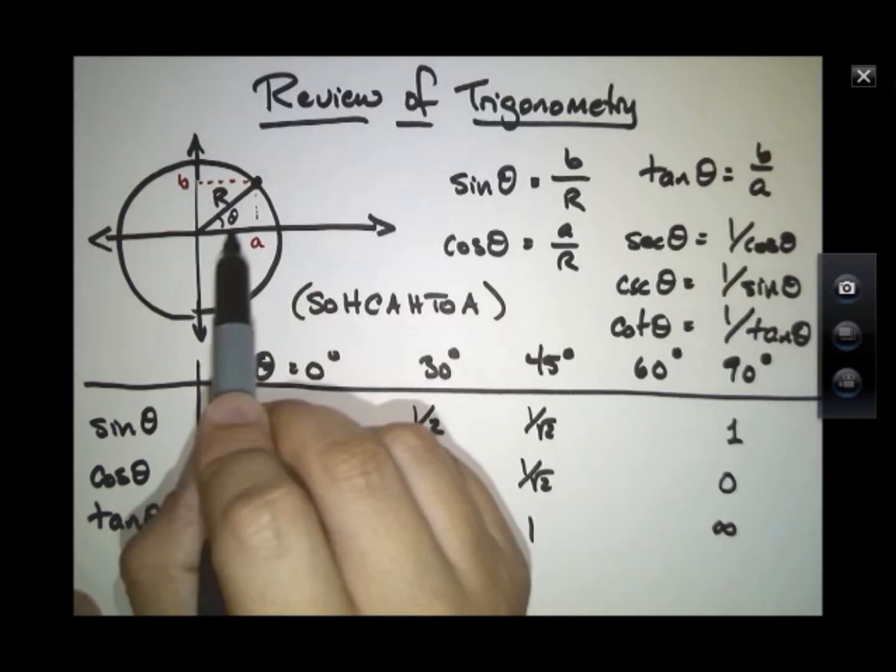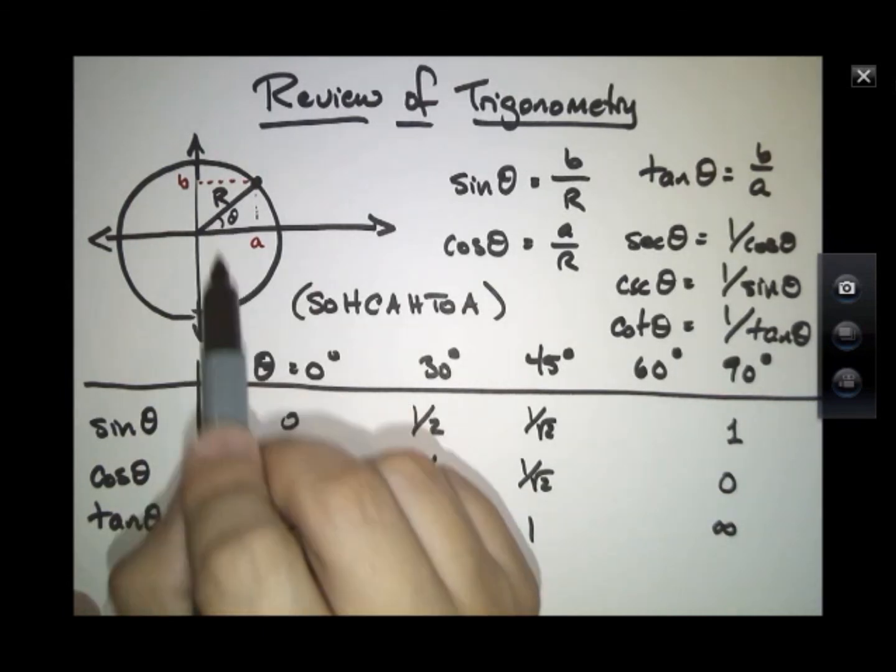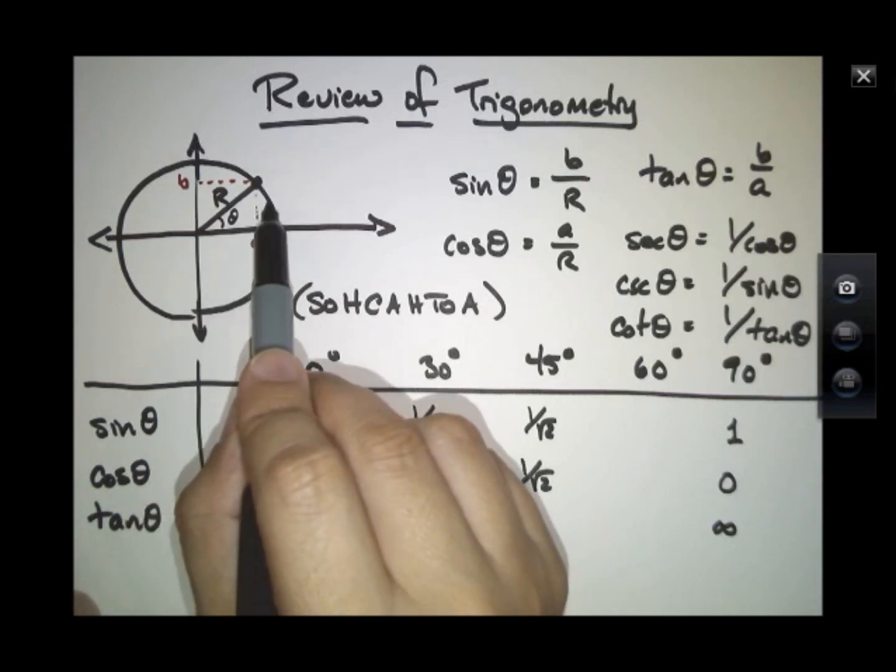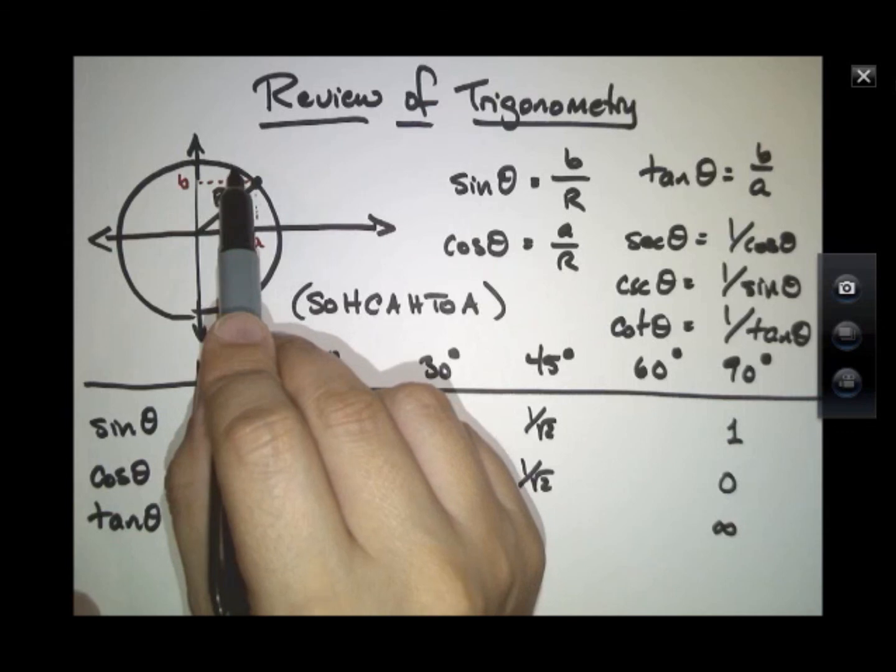So 60 degrees looks very similar to 30 degrees, it's just that instead of being down here more, that point B is flipped over on the other side of 45 degrees.